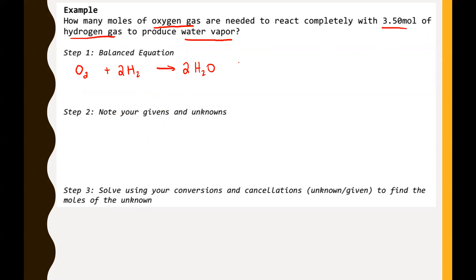Step two, note your givens and your unknowns. You could say we have 3.50 moles of hydrogen gas. Personally, though, what I do is I take my givens and I put them directly underneath whatever they correspond with in the balanced equation. I probably write right underneath this 3.50 moles. That helps me visualize a little bit better and helps me keep track of where I'm going and what I've got.